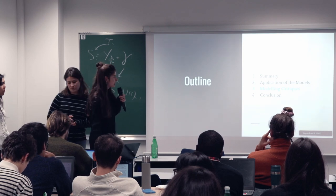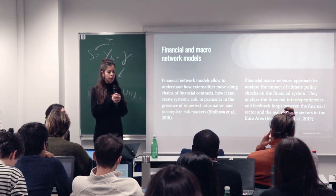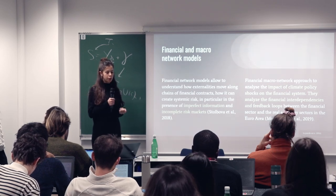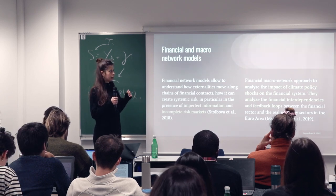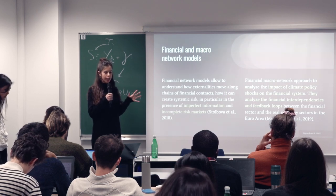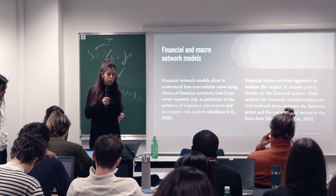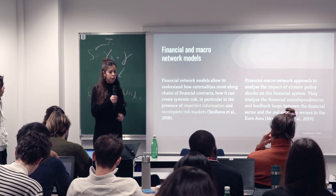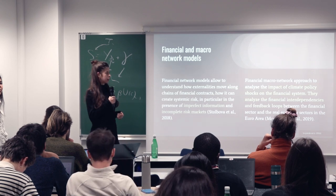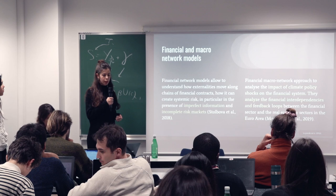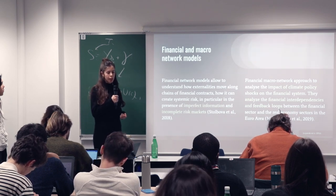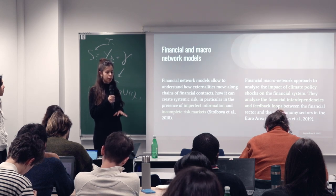Before the modeling critiques, we would like to highlight another potential model that could complement those presented in the paper: financial and macro network models. These models analyze connections between micro and macro levels and the feedback between all institutions and agents. Financial network models allow understanding how externalities move along chains of financial contracts and how systemic risk is created, particularly in the presence of imperfect information and incomplete risk markets. A 2019 study by Monasterolo et al. used a financial macro network approach to analyze the impact of climate policy shocks on the financial system and the feedback loops between the financial sector and the real economy.